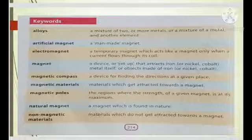Next one is, what is magnet? A device or setup that attracts iron or nickel or cobalt, metal itself or objects made of iron, that is known as magnet. What is magnetic compass? A device for finding the directions at a given place, that is magnetic compass. What is magnetic material? The material which get attracted towards the magnet. For example, iron. Magnetic poles, the region where the strength of a given magnet is at its maximum.